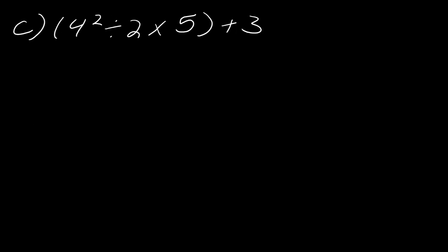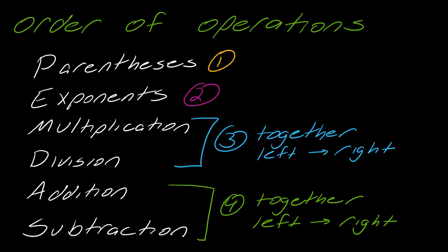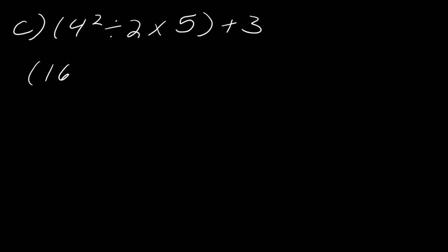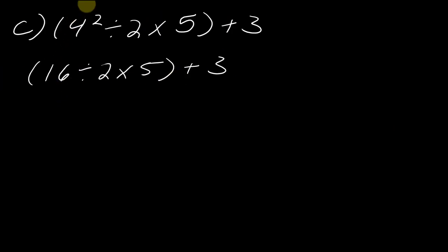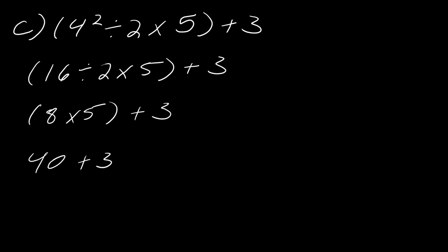This next example has a little bit of everything. Pause here, give it a try, then hit play when you're ready. There's a set of parentheses, and within those parentheses there is an exponent. According to the order of operations, I start inside the parentheses and do the exponent first, giving 16 divided by 2 times 5. Then working inside the parentheses left to right: 16 divided by 2 is 8, so 8 times 5 is 40, and then 40 plus 3 equals 43.